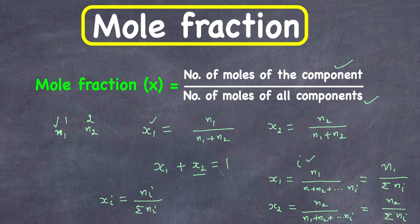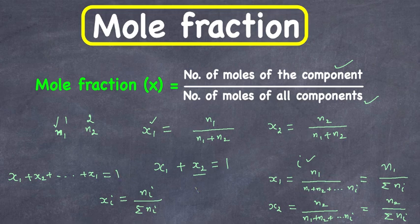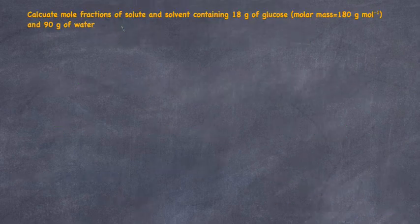The sum of all mole fractions is going to be equal to 1. So if we have i number of components, x1 plus x2, continuing up to x_i, equals 1. Now let's go over one example to understand how we use this in numerical problems.